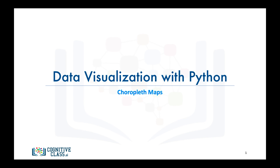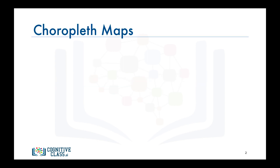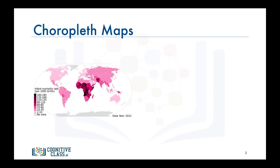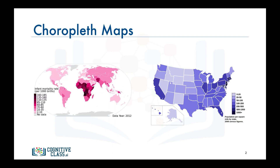In this video we will learn how to create a special type of map called a choropleth map with Folium. Most of you have seen maps similar to these — these are what we call choropleth maps. A choropleth map is a thematic map in which areas are shaded or patterned in proportion to the measurement of the statistical variable being displayed, such as population density or per capita income.